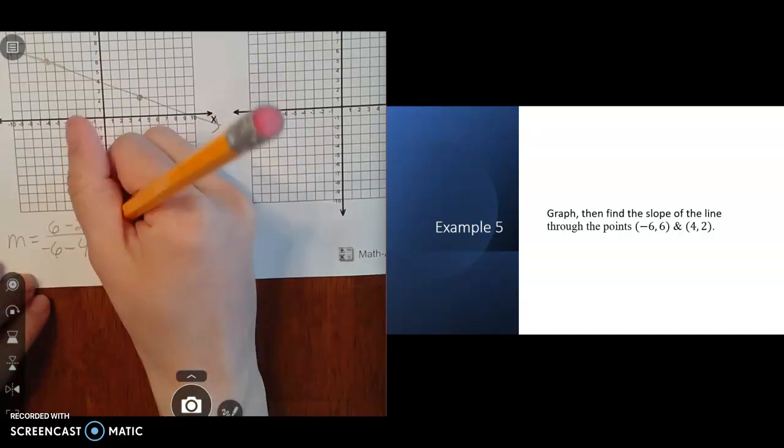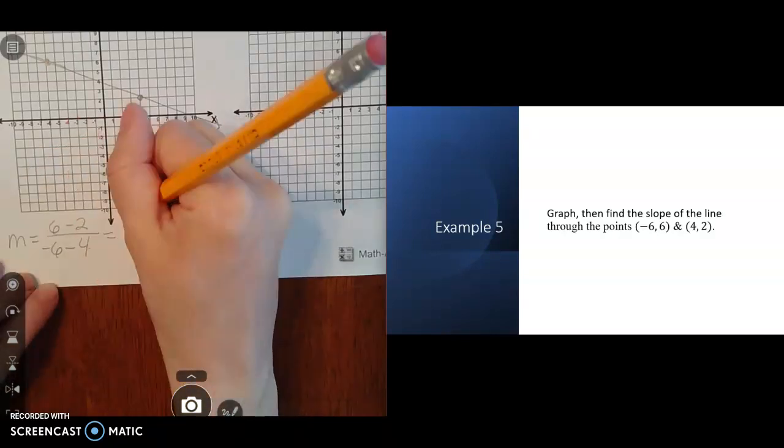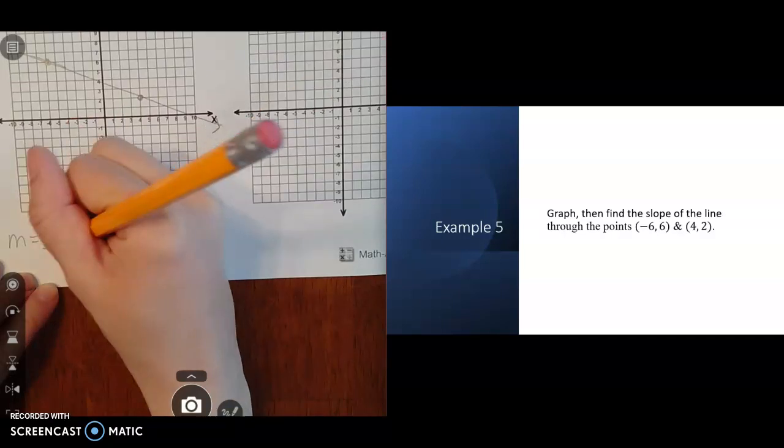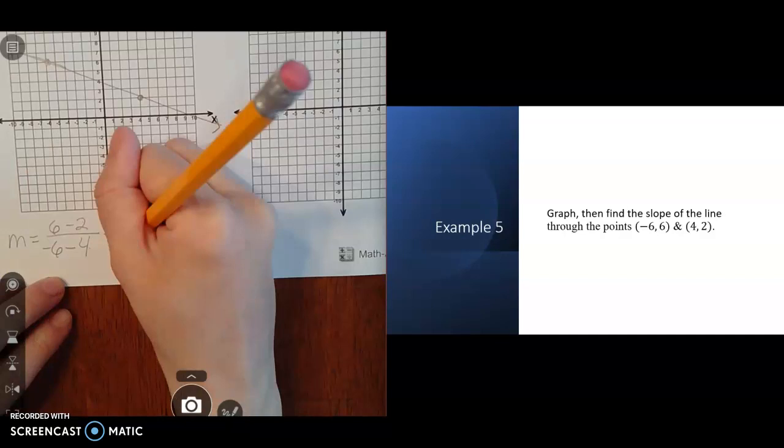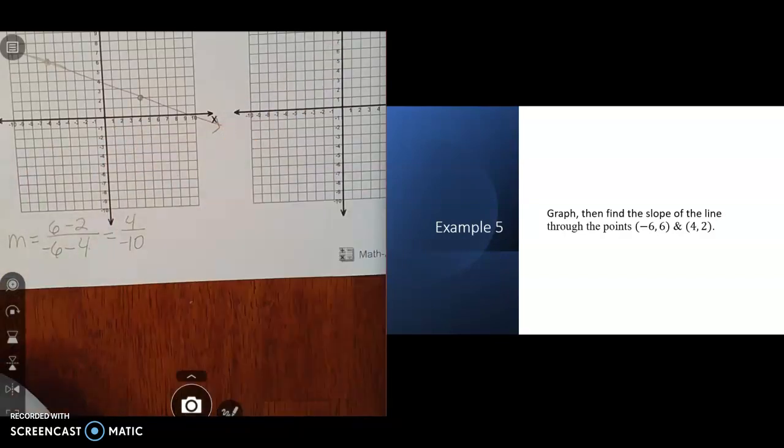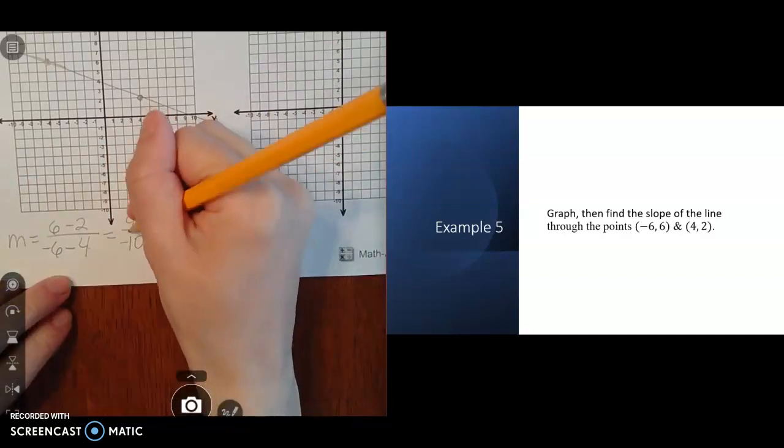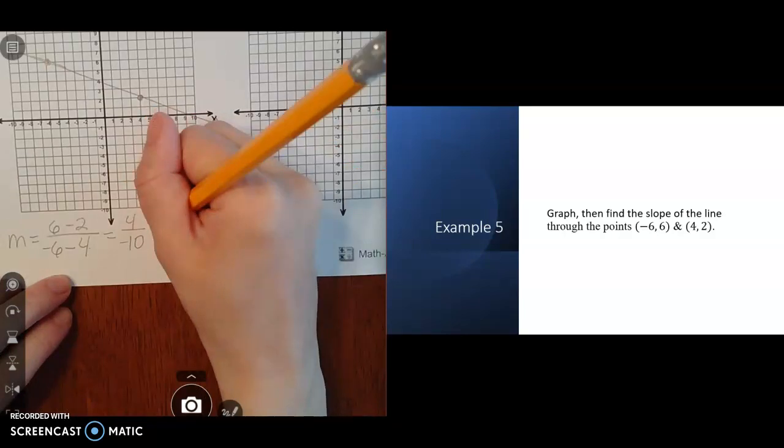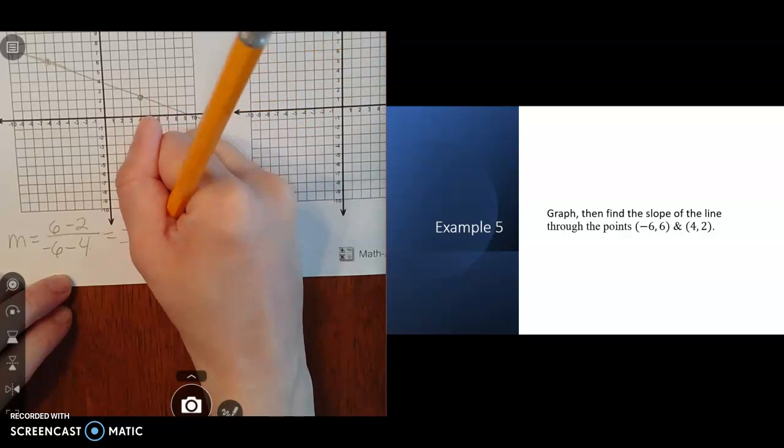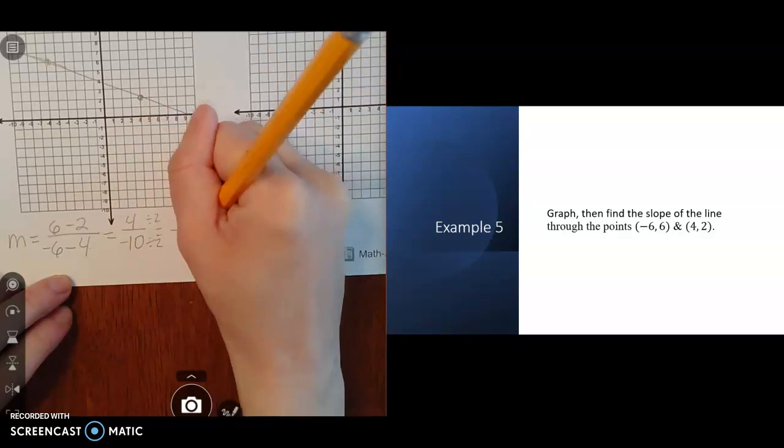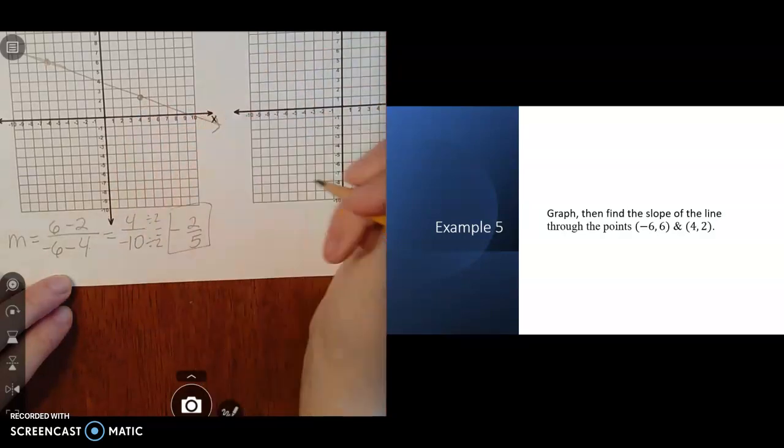From here, you're just simplifying. 6 minus 2 equals 4. Negative 6 minus 4 is the same as negative 6 plus negative 4, which equals negative 10. Then I'll simplify the fraction. A positive divided by a negative is negative. 4 and 10 are both divisible by 2, so I can simplify to negative 2/5. That's our slope.